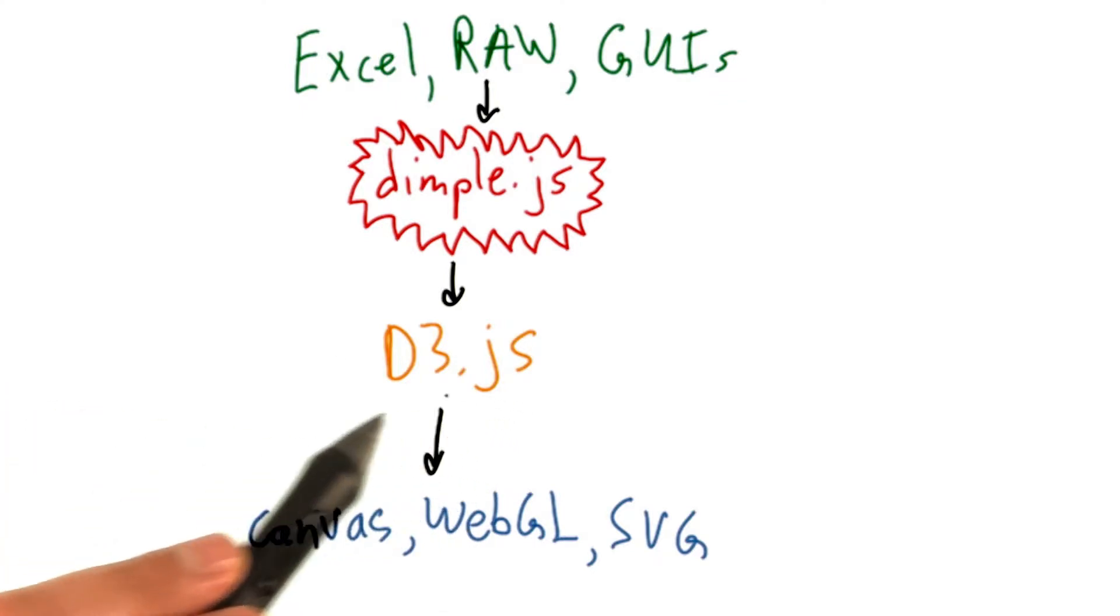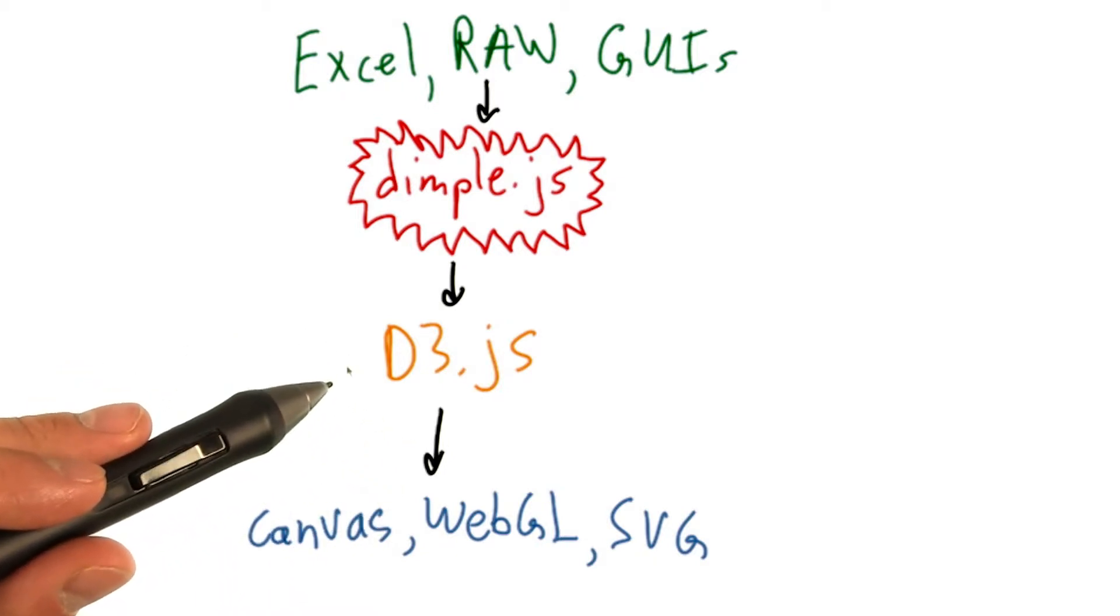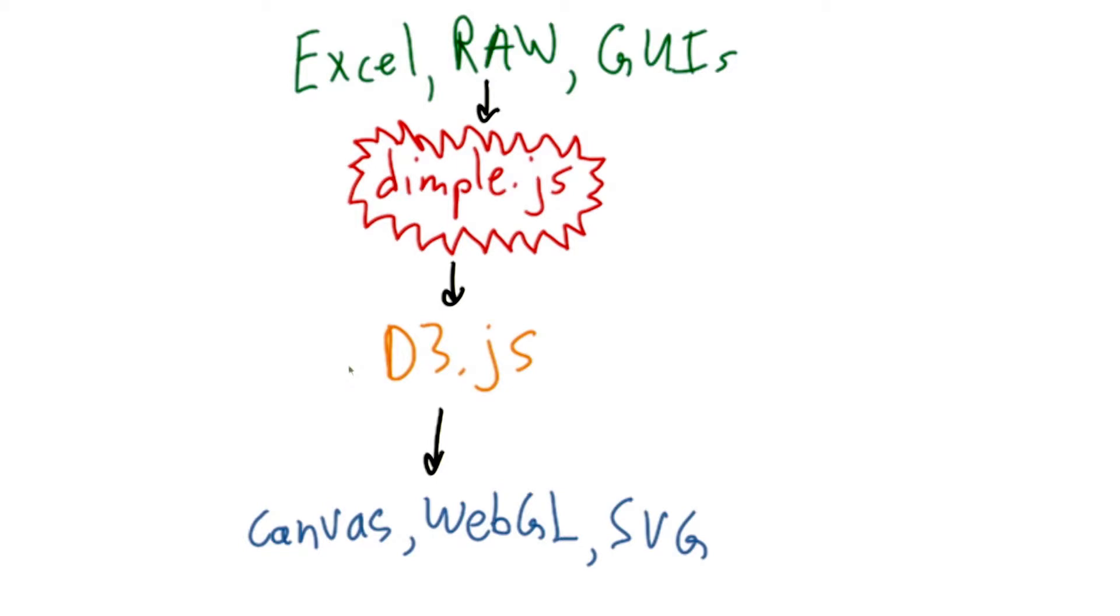Even though we saw D3 in lesson one, we only manipulated HTML objects and a little SVG, and did not get into any data-driven operations. We will be using D3 itself to create interactive visualizations and animations in lesson four.